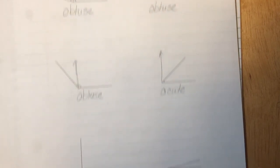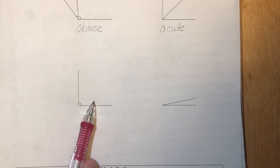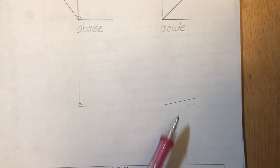We have two angles left to look at. So pause the video and see if you can figure out what this and this angle would be called. Acute, right, or obtuse.